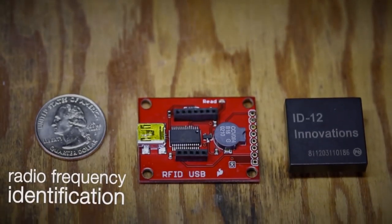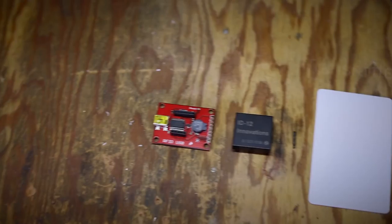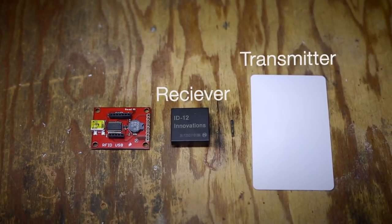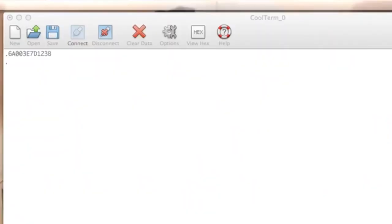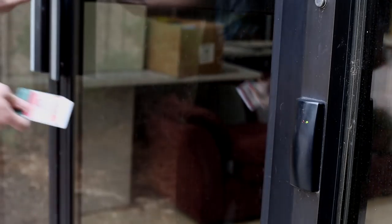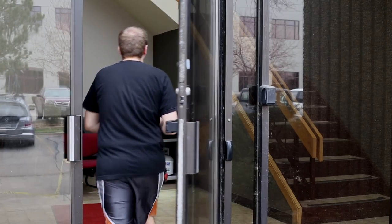RFID stands for Radio Frequency Identification. There are typically two parts involved, a transmitter and a receiver. Transmitters can come in a variety of form factors such as cards, buttons, and small glass tubes. Each transmitter has a unique address associated with it, allowing you to embed them into everyday devices used for identification. The most common application is using RFID cards for building entry.